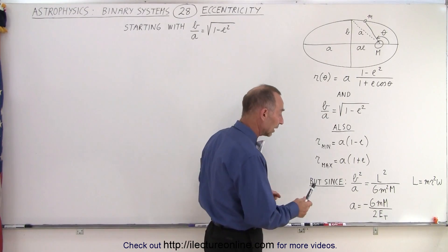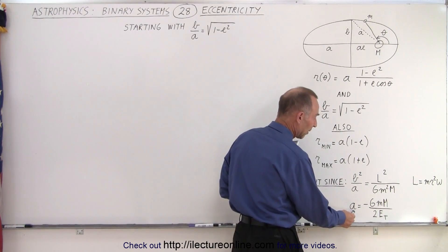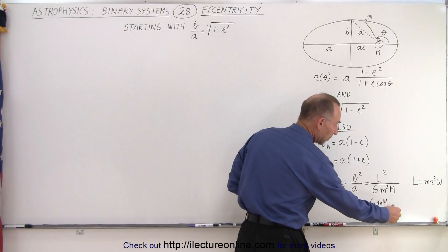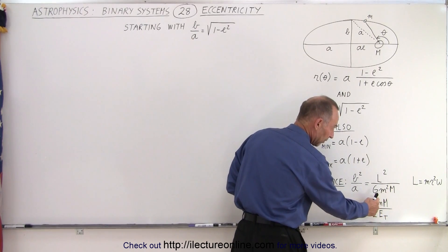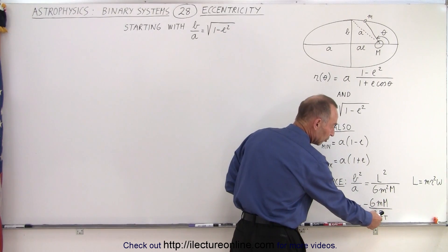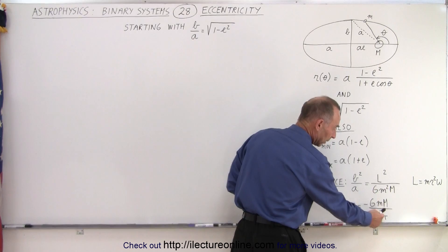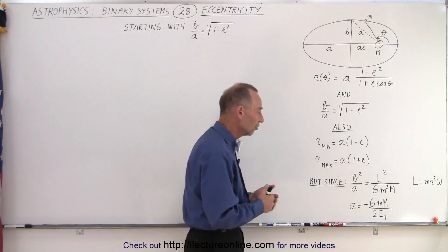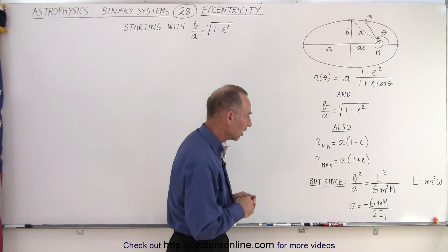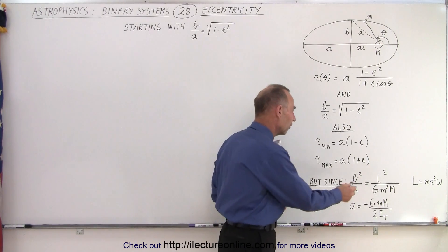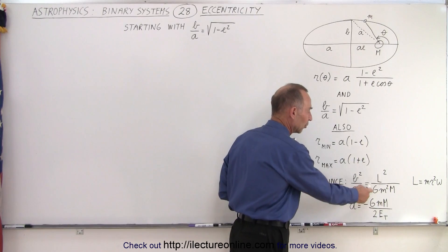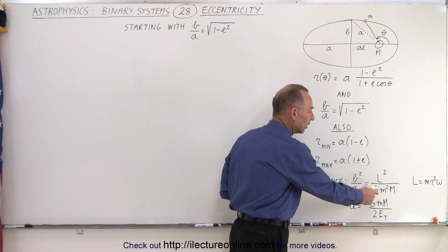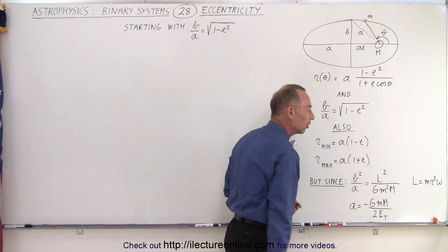We also know the relationship between A, the semi-major axis, and the properties of the two objects, the larger object and the smaller object mass. We have the total energy of the small object, the planet, and G, which is the universal gravitational constant. And also the ratio of b squared over A, where b is the semi-minor axis and A is the semi-major axis, in terms of the angular momentum, G, small m, and large M.